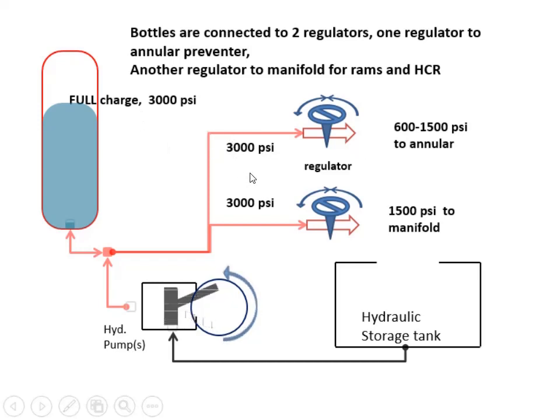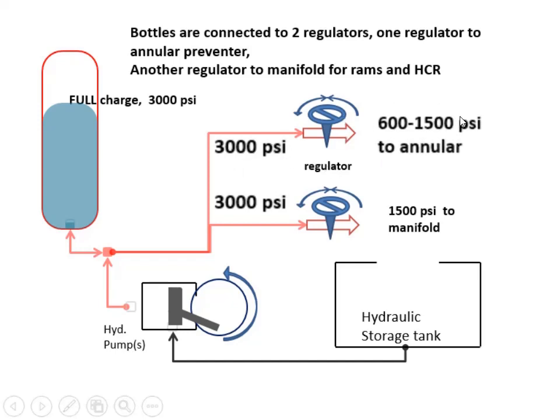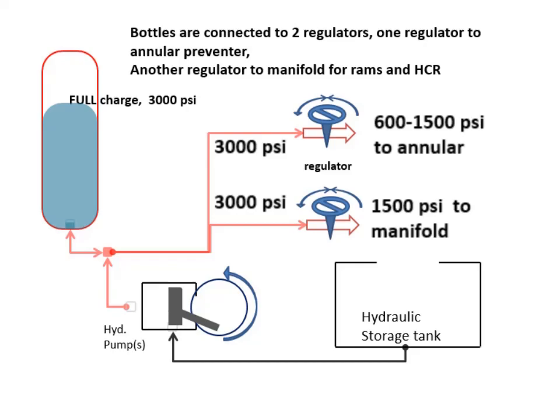For annular preventer, usually the pressure is regulated from 3000 PSI to between 600 and 1500 PSI, depending on the manufacturer of annular preventer. For the manifold, the pressure is regulated to 1500 PSI. All RAMs and HCR on the BOP stack will be connected to this manifold.